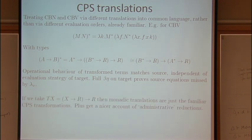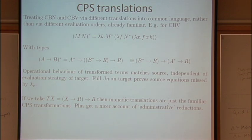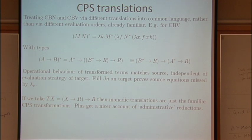In fact, if we take T of X to be the continuation monad — X arrow R arrow R — where R is some result type for the output, then these continuation passing transformations are exactly the monadic transformations we had before. The CPS transformations were just a special case of the general monadic transformation. In fact, this is the only way I can ever remember the CPS transformations: factor it through the monadic thing and then fill in eta and the extension operation for continuations.